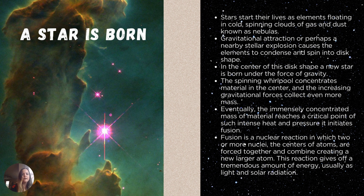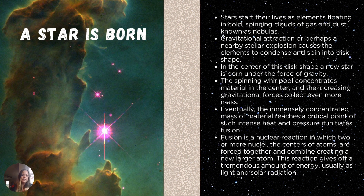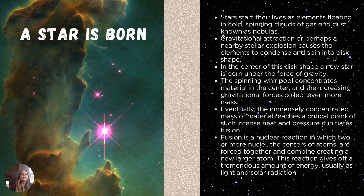The next step in the creation of what we see today would be the creation of stars, including our own star. Stars started out as elements that were just floating around after the Big Bang, and they started spinning into clouds of gas and dust known as nebulas. This is described in the nebula hypothesis, in which the center of the disk would form a new star, taking on gravity and collecting more material. There was a nuclear reaction where nuclei are forced together and combined to create a larger atom, and this fusion would cause the star to grow.